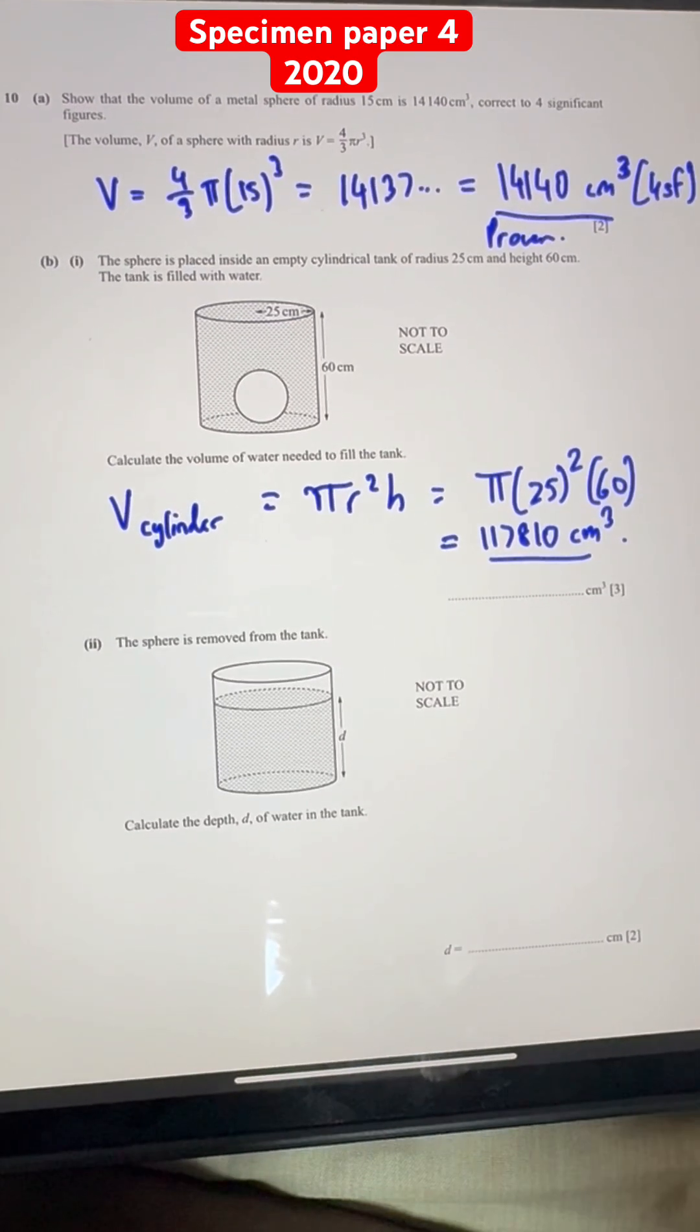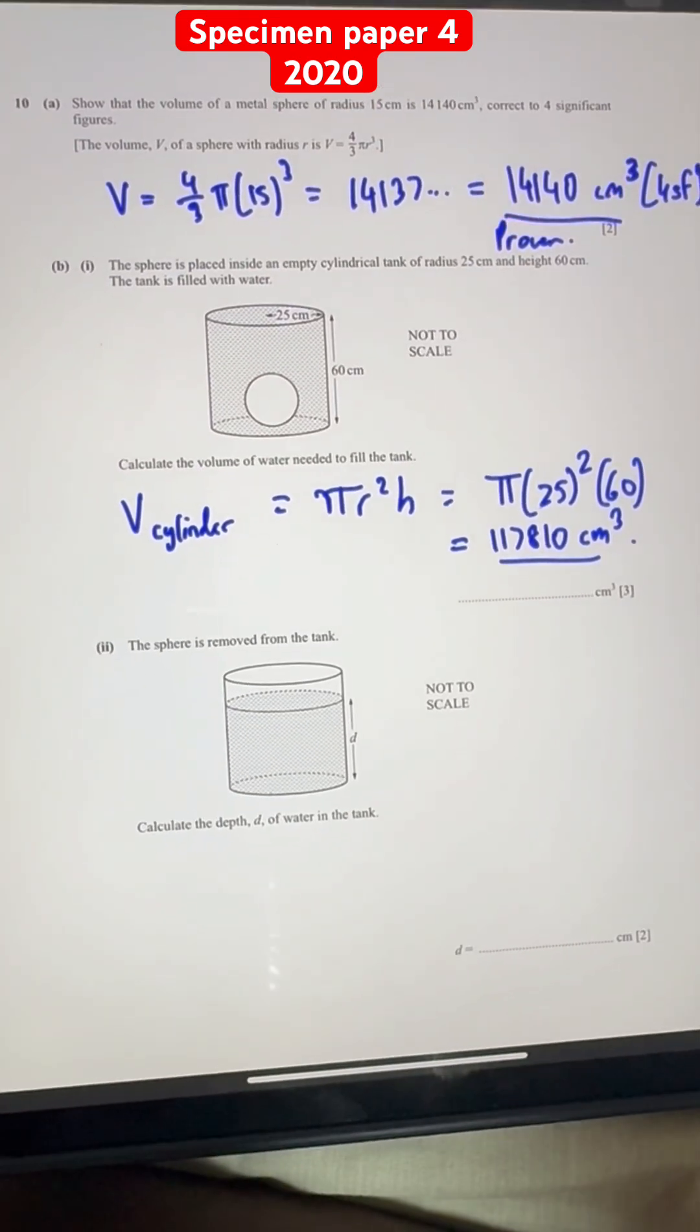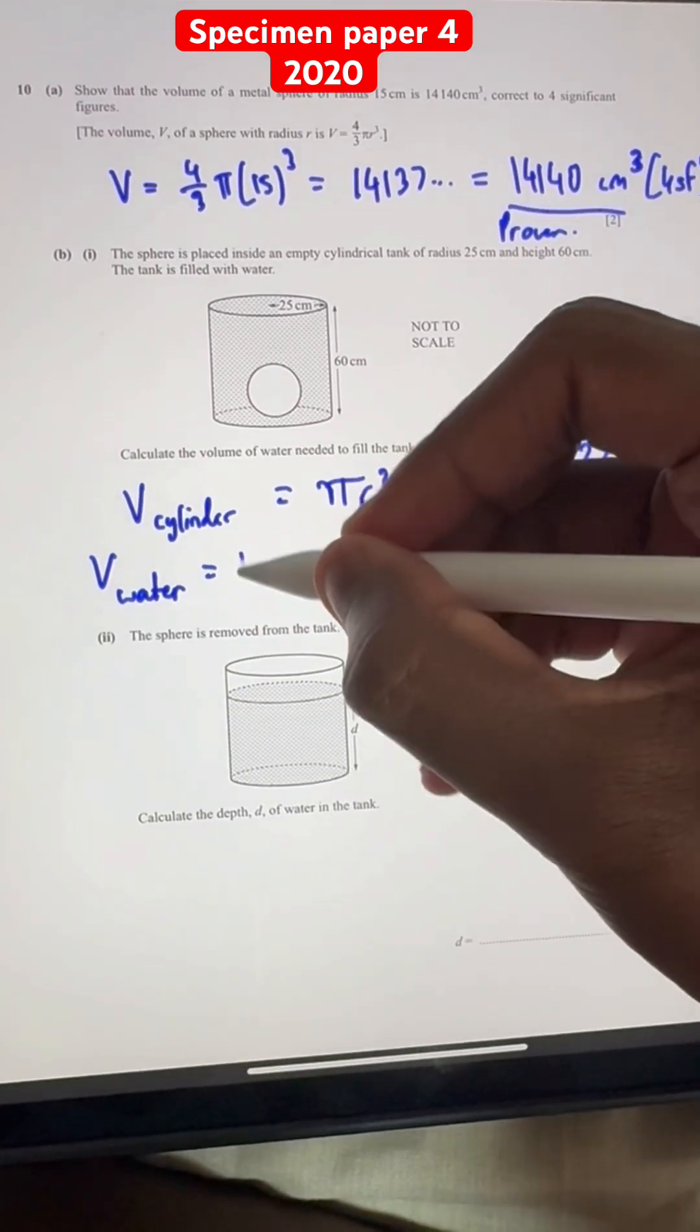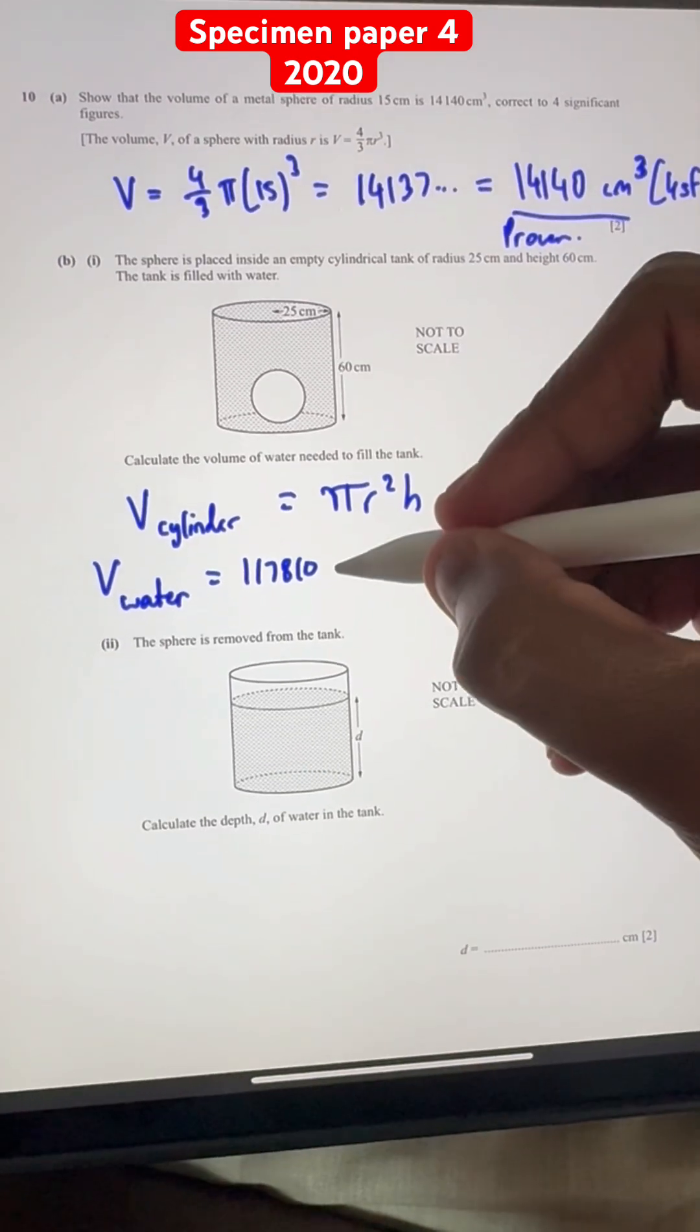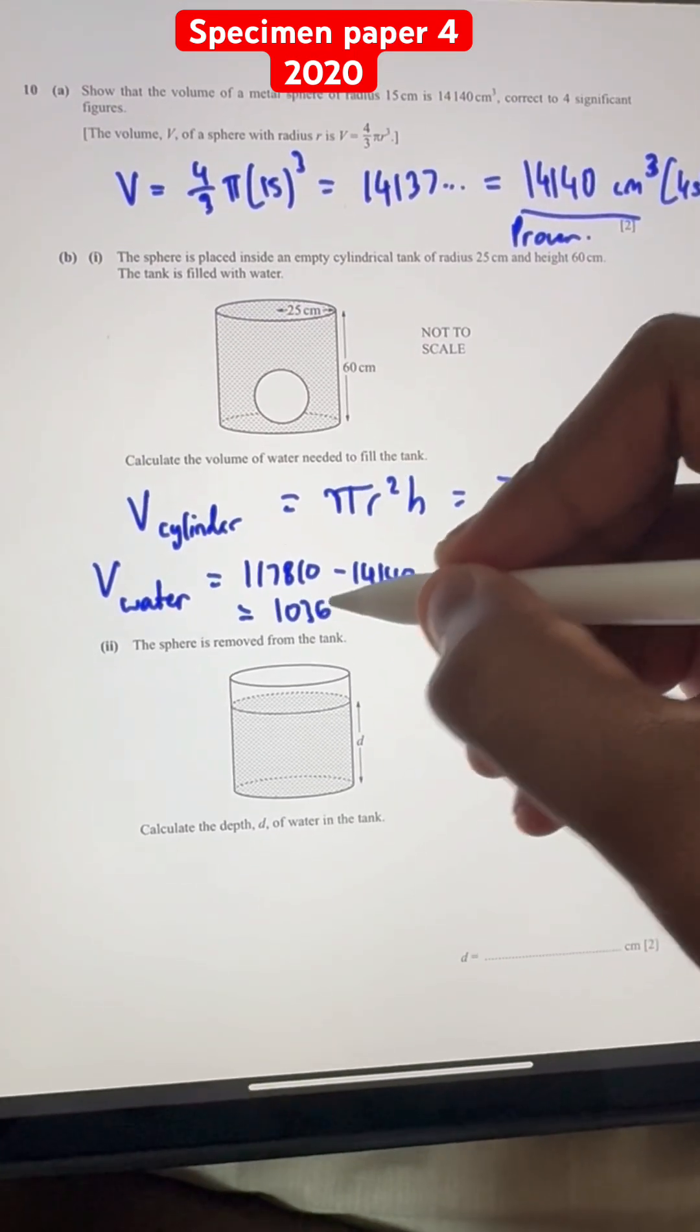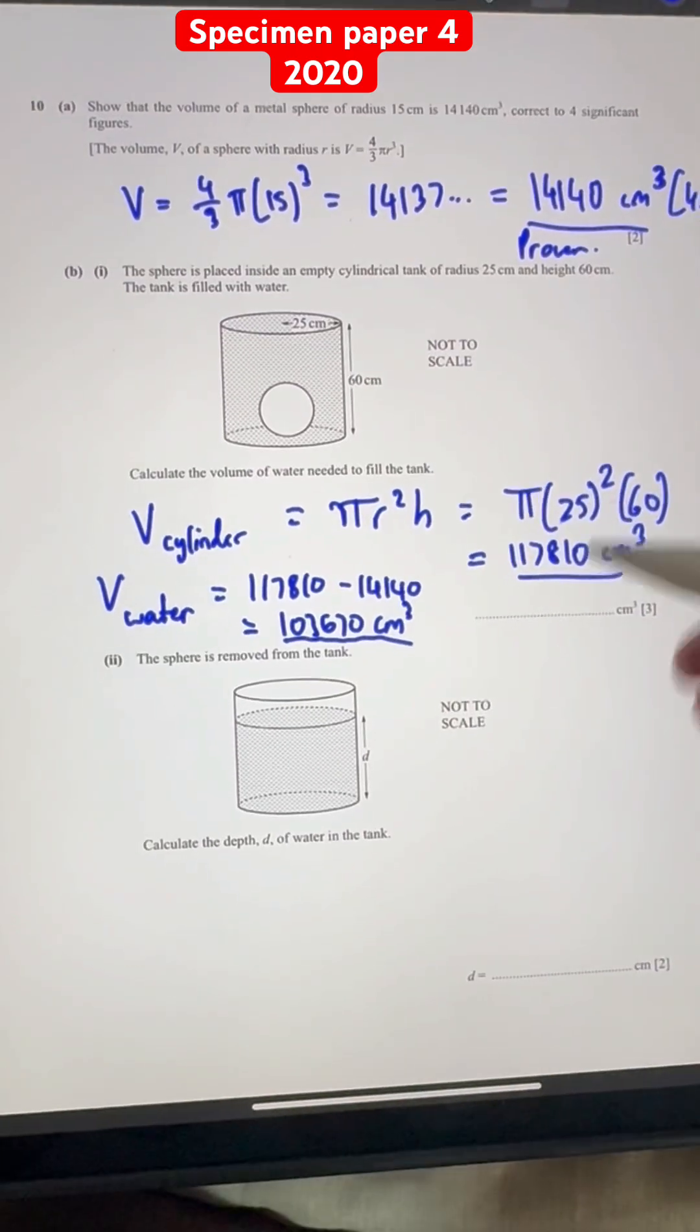And over here, we have the volume of the sphere already, which is 14140. So the volume of water, which is required to fill this cylinder, excluding the sphere area. So that's just going to be the volume we just found minus the volume of the sphere. So we get 103670 cm³ of water, which you need to fill the tank.